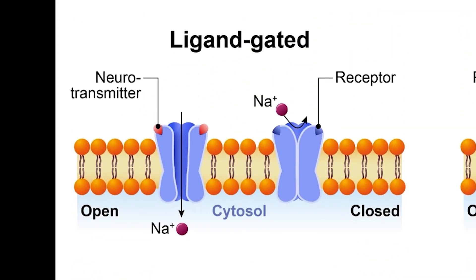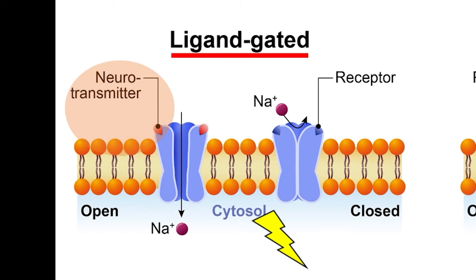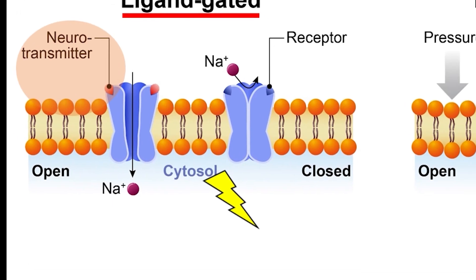Some ion channels are ligand-gated. A ligand is a molecule that can bind to a receptor, and neurotransmitters are a good example. Ligand-gated ion channels are present on neurons. When a neurotransmitter binds to the channel, it immediately opens. This releases a flood of ions into the cell, changing the electrical gradient and polarizing the cell membrane, creating an electrical signal which can flow through the cell.